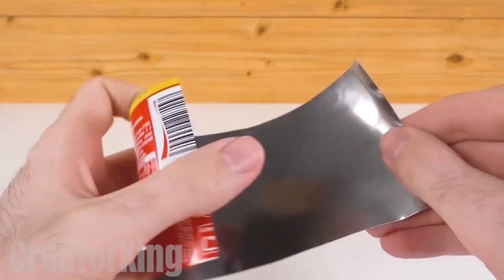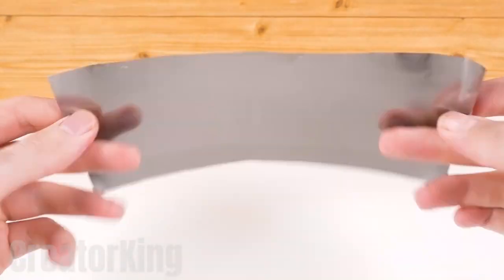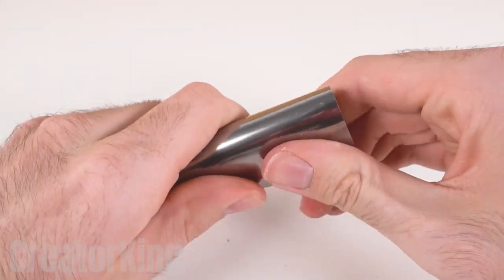Open the can lengthwise with scissors to obtain a coca-cola brand sheet. Roll it the opposite way so that it doesn't curve to one side.